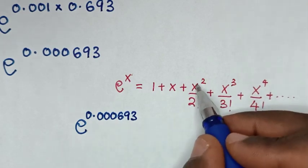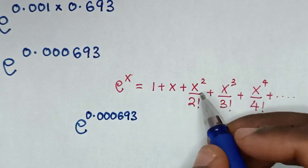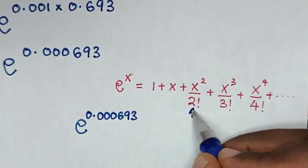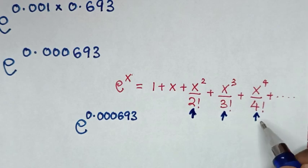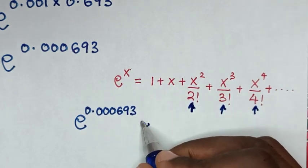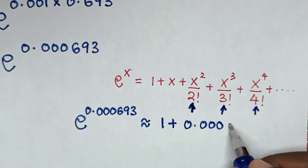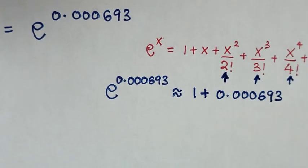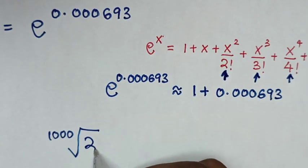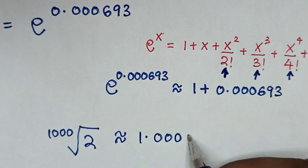When we substitute this power of x, the squared term divided by 2 factorial is very approximately equal to 0, and the higher-order terms are also approximately equal to 0. So we only keep 1 plus x, which gives approximately 1 plus 0.000693. Therefore, the 1000th root of 2 is approximately equal to 1.000693.